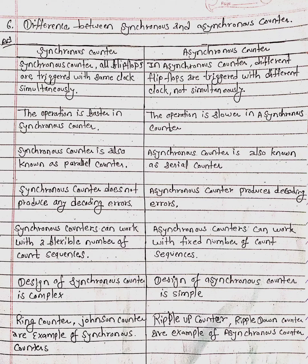Difference between synchronous counter and asynchronous counter. In a synchronous counter, all flip-flops are triggered with the same clock simultaneously, while in an asynchronous counter, different flip-flops are triggered with different clocks, not simultaneously. The operation is faster in a synchronous counter and slower in an asynchronous counter. Synchronous counter is also known as parallel counter; asynchronous counter is also known as serial counter.